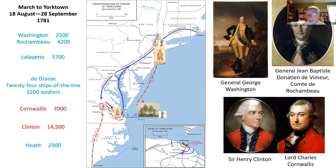What helped was French money. Rochambeau took half of his war chest, which he had brought to America, and loaned it to the Americans so they could supply their forces and pay their soldiers before they started on this campaign. They all go south, and Clinton in New York is caught unawares. By the time he realizes what's happening, it's too late for him to do much.